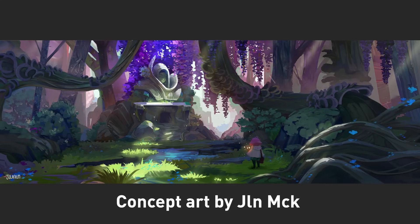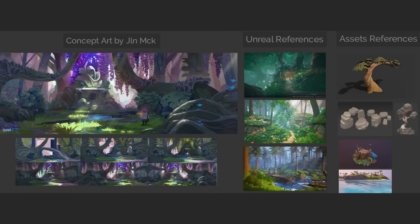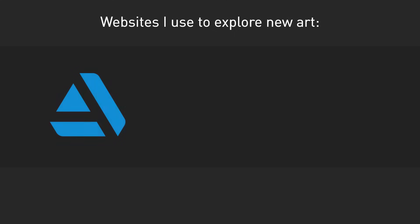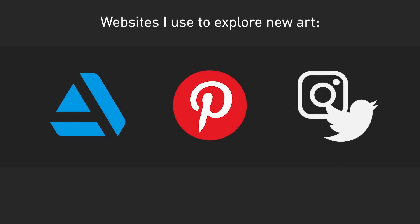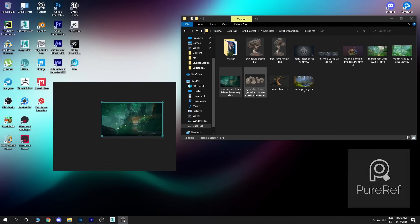Every great project starts with a nice looking concept. First, I look for the one I like the most. After that I take a look at some references I can use in order to achieve the look of the concept, keeping in mind the style, props, lighting and mood. Websites that I usually use for that are ArtStation, Pinterest and social media. To gather all the references in one place I always use PureRef.